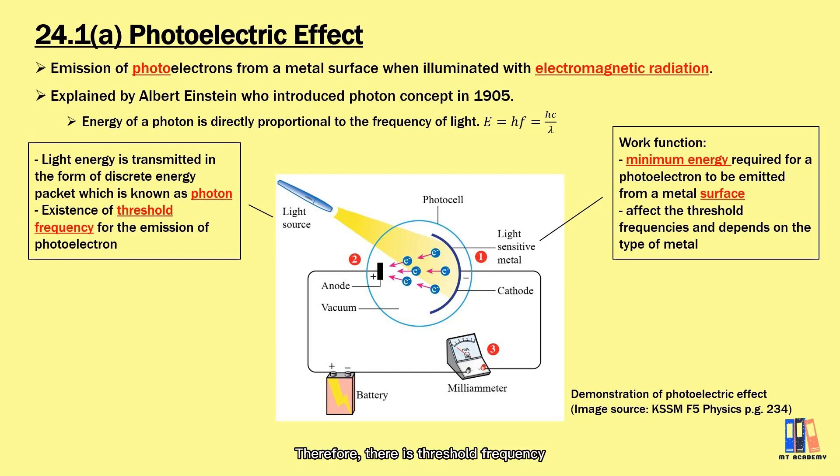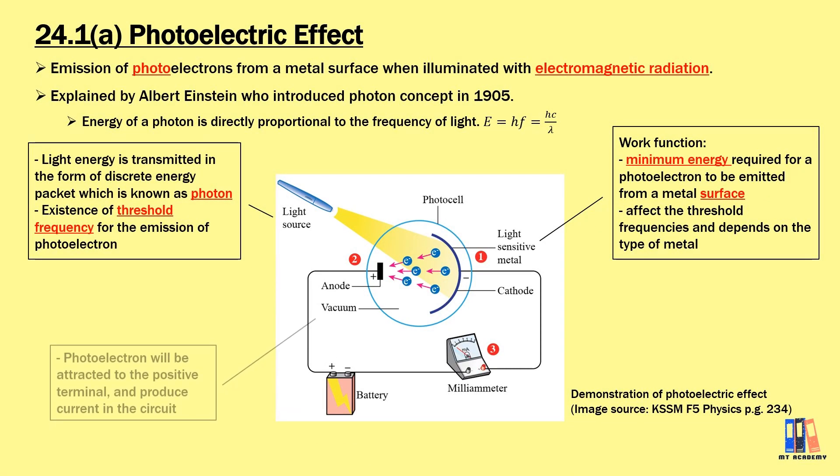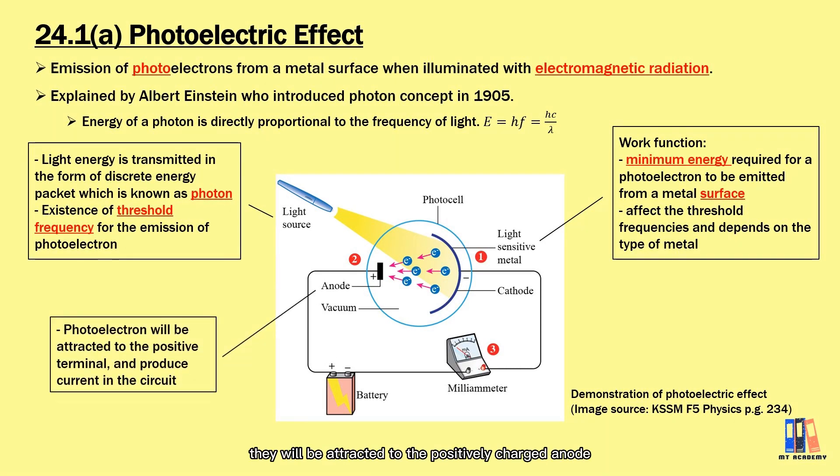Therefore, there is threshold frequency for the photoelectric effect to occur which is proposed in the quantum theory. After the photoelectron is released, they will be attracted to the positively charged anode and then we can observe the current flow in a complete circuit.